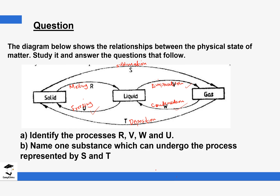Name one substance that can undergo the process represented by s and t. S is sublimation and t is deposition. Examples of substances include iodine, dry ice, ammonium chloride, anhydrous iron(III) chloride, and benzoic acid. These substances were discussed previously in a previous lesson — you can go there and check them out.